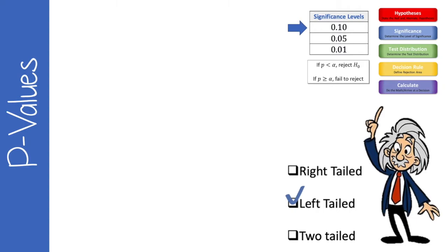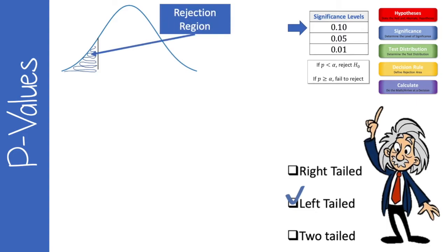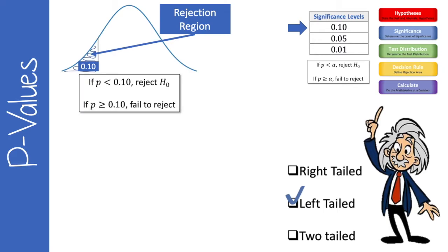Now let's try a left-tailed test at the 0.10 significance level. On the normal curve the rejection region is on the left side with an area of 0.10. Our decision rule: if p is less than 0.10 we reject the null; if p is greater than or equal to 0.10 we fail to reject the null.